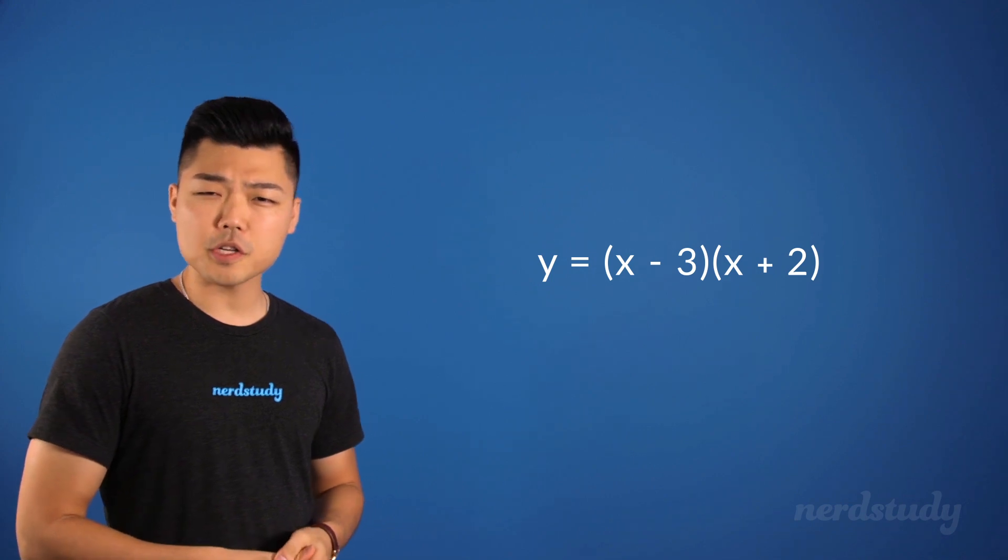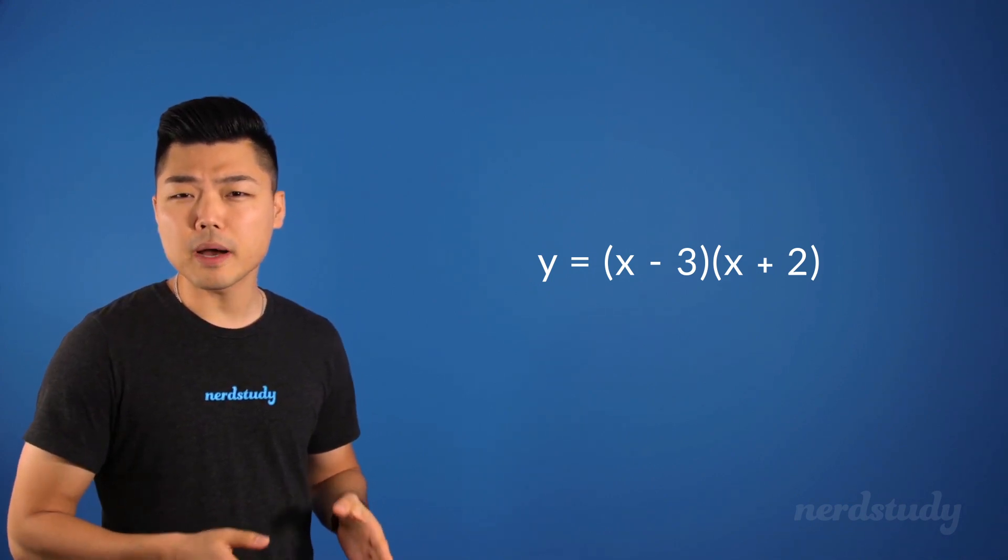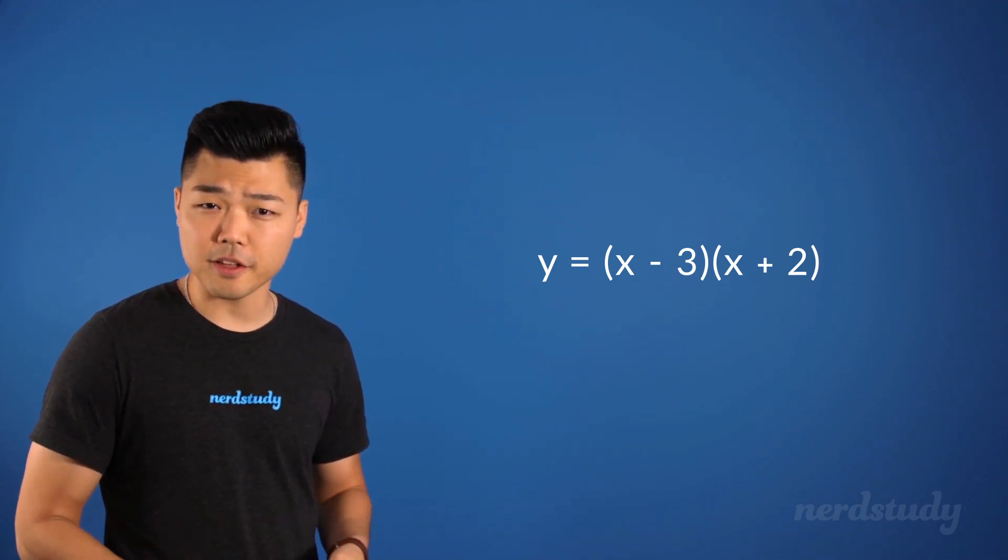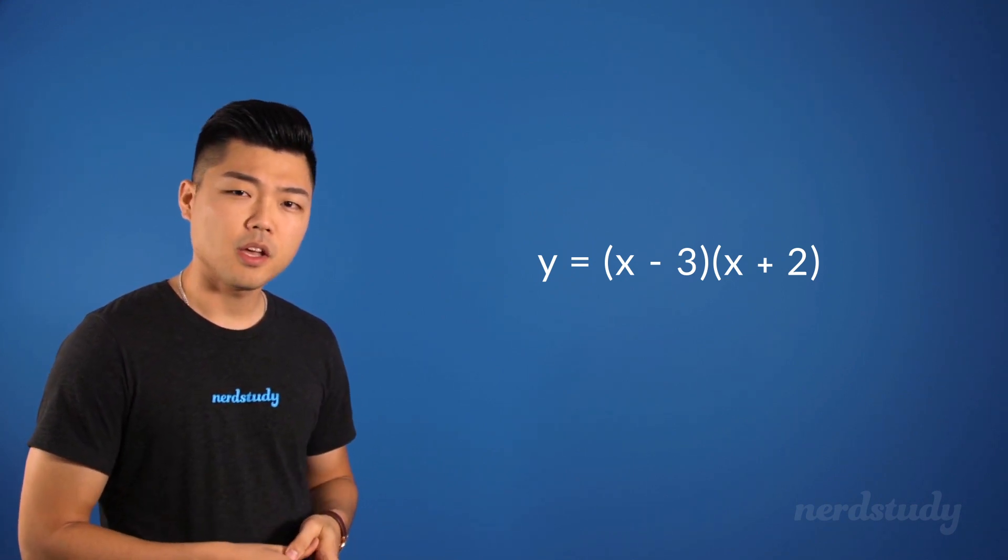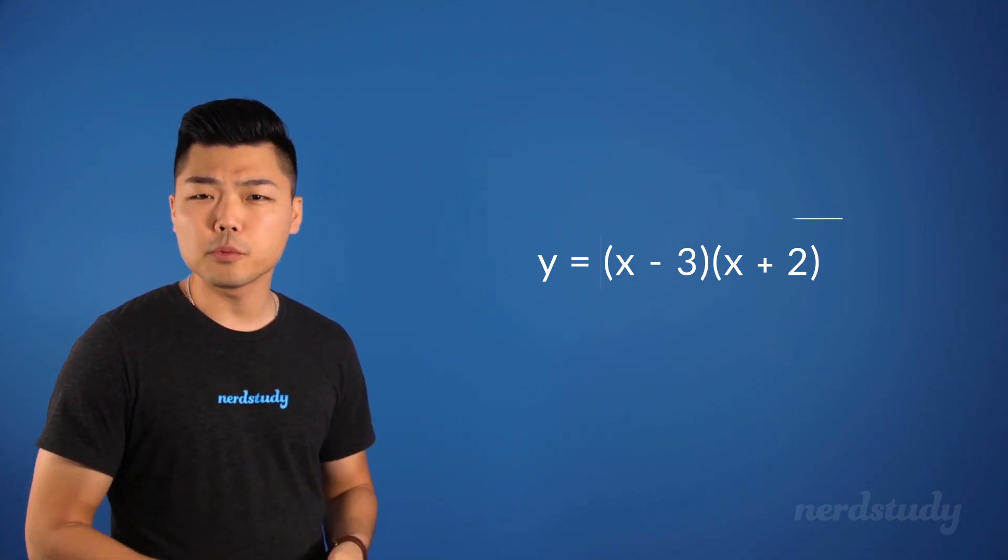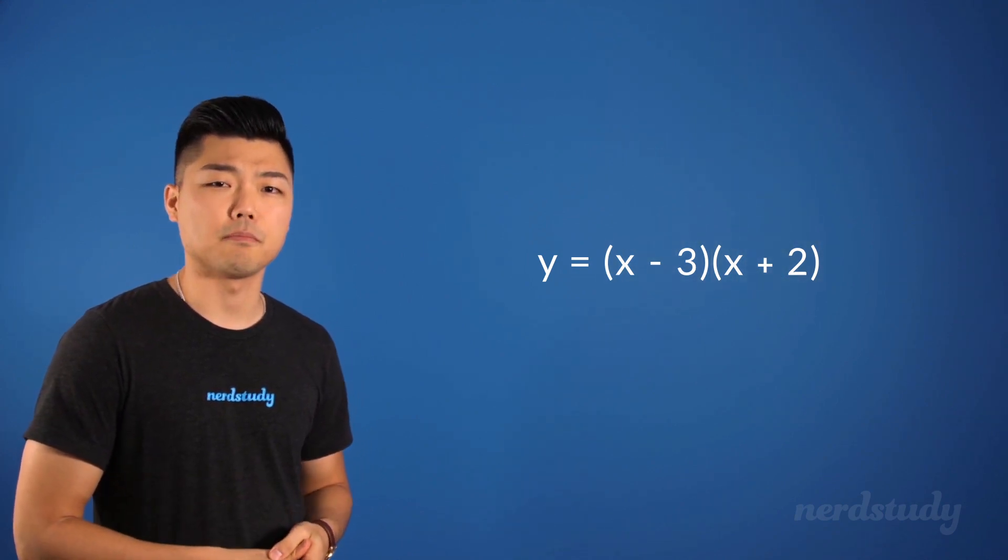For example, there are situations where the two binomials that are being multiplied together in our quadratic equation are identical. In this situation, the binomials were not the same.